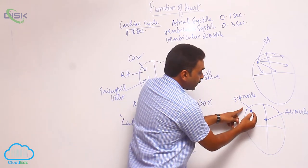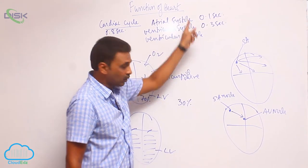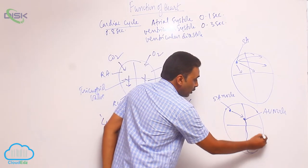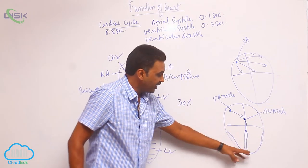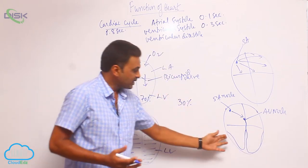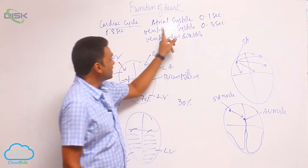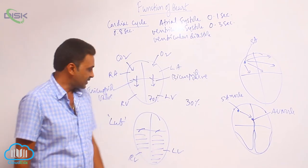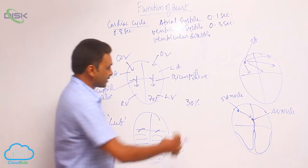The impulses generated from the SA node are taken up by the AV node at the time of atrial systole. Those impulses travel through the bundle of His, left and right branches, and through Purkinje fibers into the walls of the ventricles. Once the impulses reach the walls of the ventricles, both ventricles contract at the same time. This is called ventricular systole, completed in 0.3 seconds.